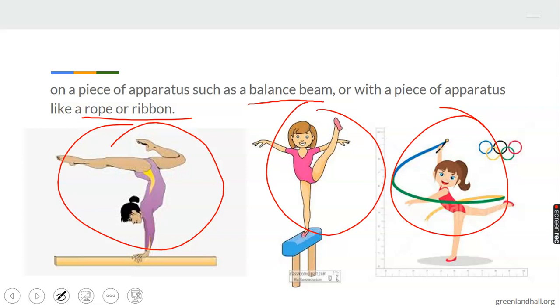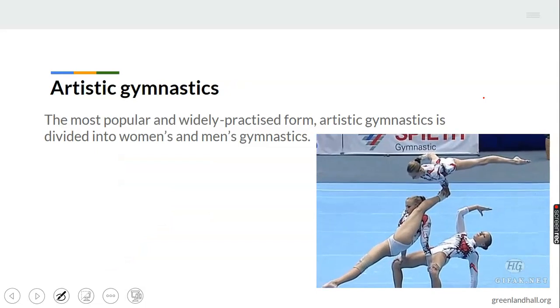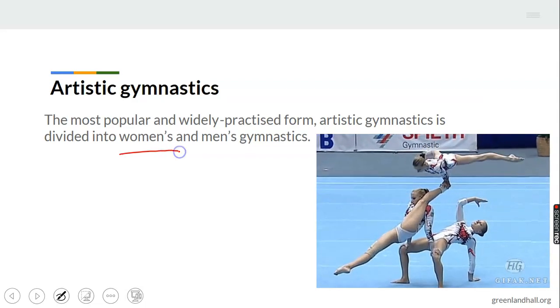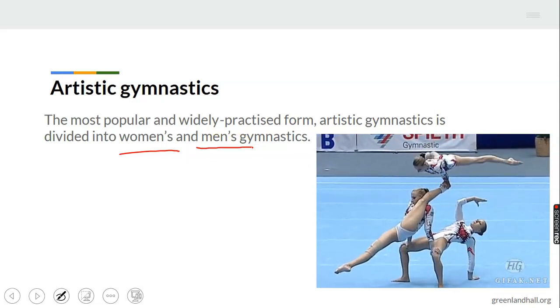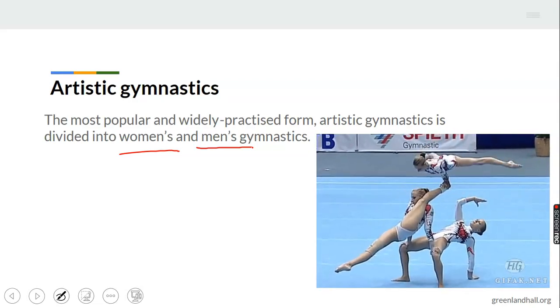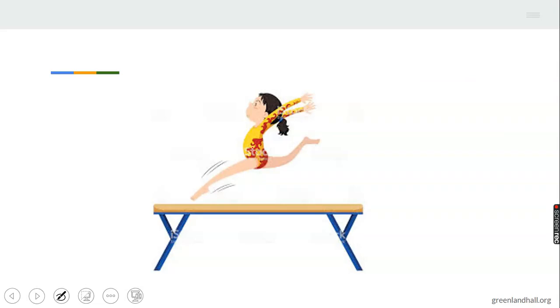We have moved now to the types of gymnastics. We have artistic gymnastics, the most popular and widely practiced form. Artistic gymnastics is divided into women's and men's gymnastics. Look at what these ladies are doing. They do their acrobatic display on balance beam or on uneven bars. These people can flip, they can swing, they can roll, they can turn on the pommel horse.